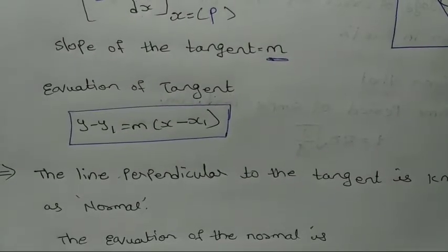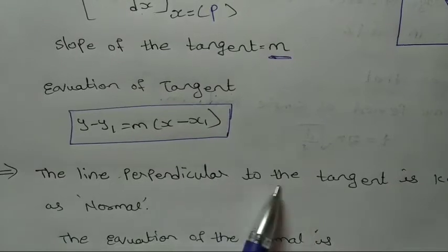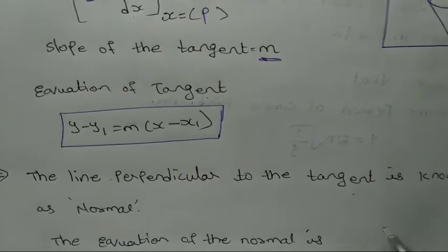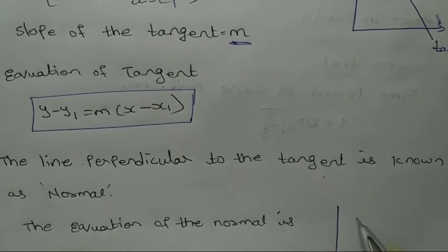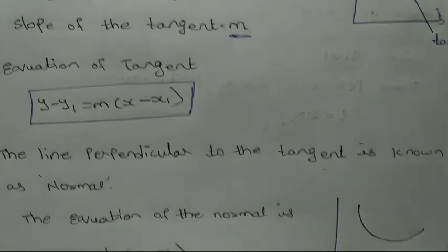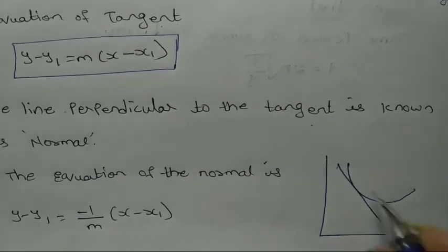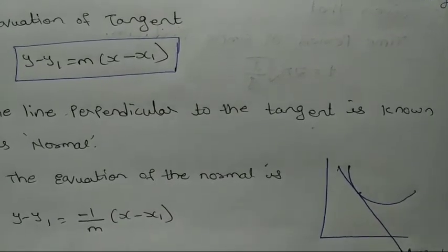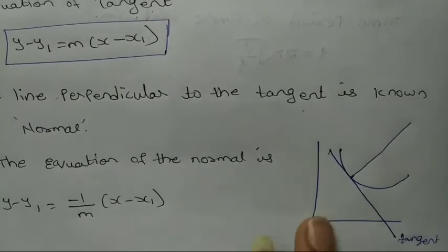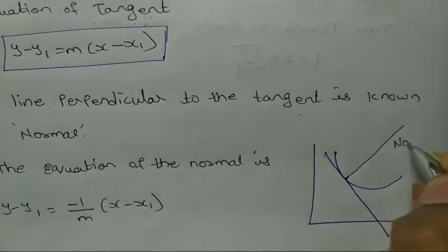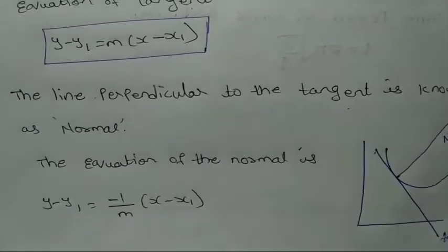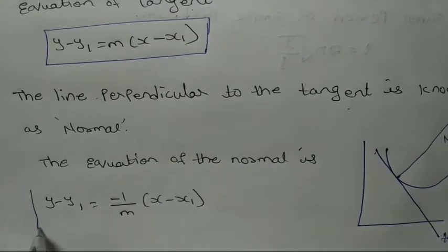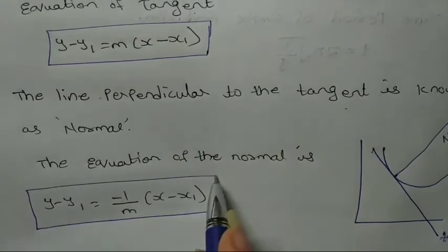Now, what is normal? The line perpendicular to the tangent is known as normal. The equation of normal is: y minus y₁ equals minus 1 by m, into x minus x₁.